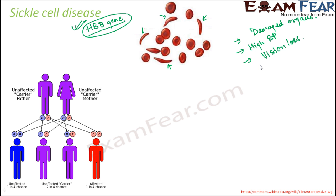Let us look at the genetics of sickle cell disease — how it gets transmitted from one generation to the next. The carriers of the sickle cell gene remain normal, though they may show some mild symptoms when exposed to low oxygen concentration. Carriers are heterozygous. For example, if the father and mother are both heterozygous — capital R, small r — where small r represents the defective gene, the person carries a defective gene but is not affected with sickle cell disease. A person will be affected only when homozygous with the defective gene.